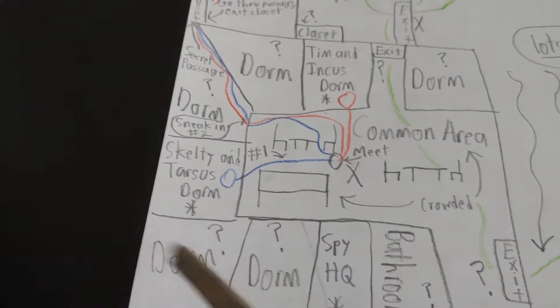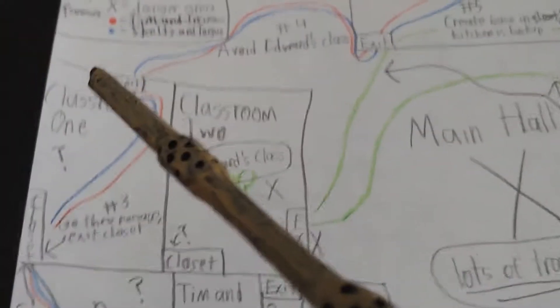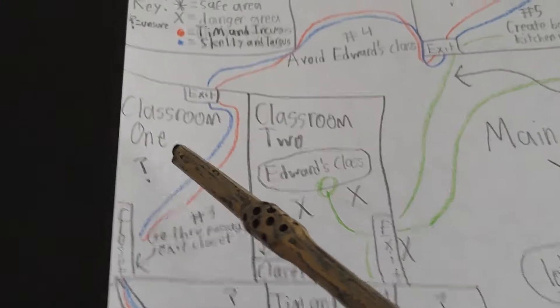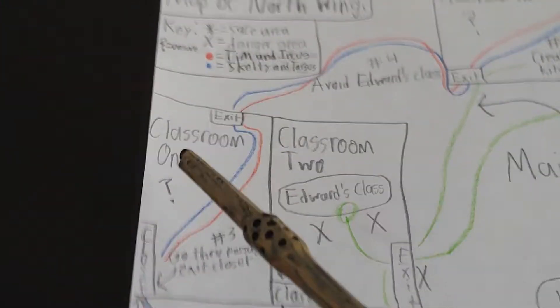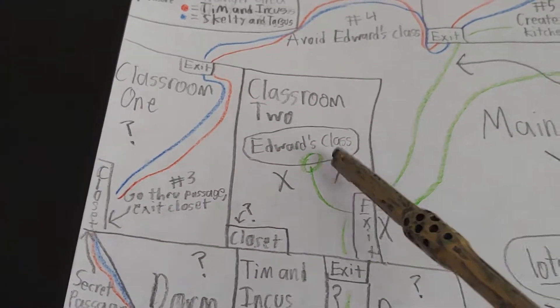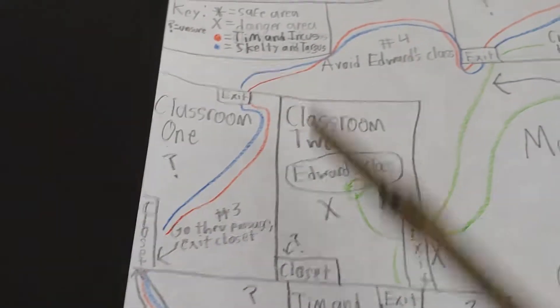This is the closet which is spy HQ. There's also other dorms and it connects directly to classroom one which is an unknown zone because it's a teacher. And then classroom two which is Edward the train's class. This is dangerous and it can go right in here.